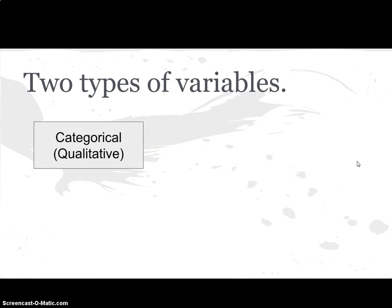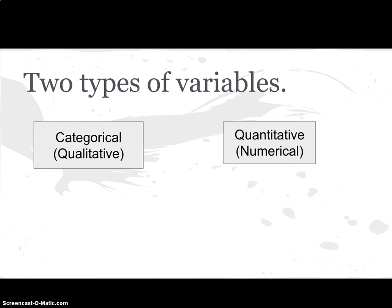We have categorical, sometimes called qualitative data. I'll get to exactly what qualitative and categorical data look like in just a second. We also have quantitative data, and sometimes that's called numerical. Quantitative data comes in really two forms. We have something called discrete variables — one, two, three — I'll give you an example of what that looks like in just a second.